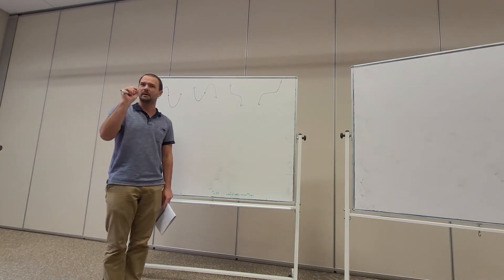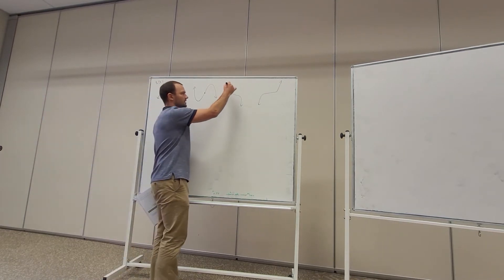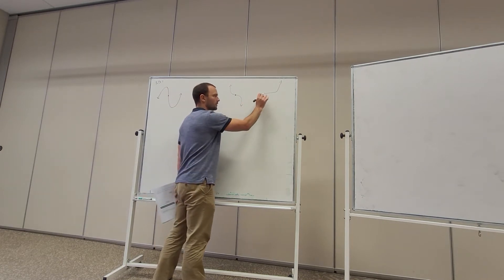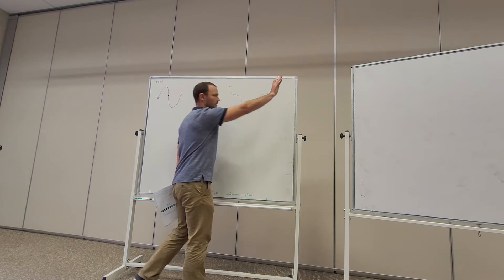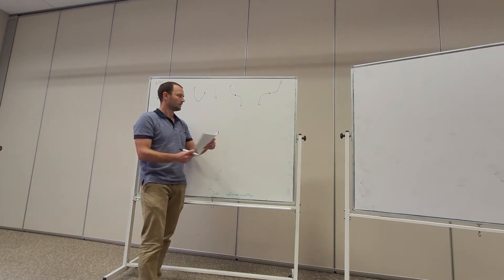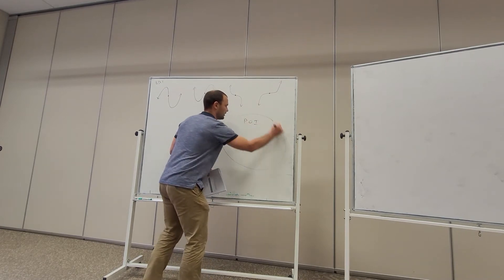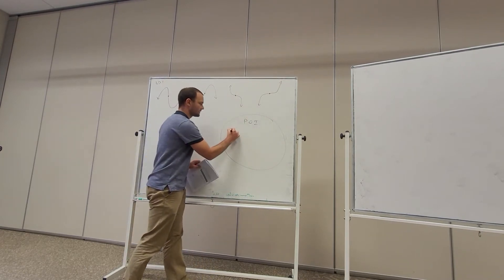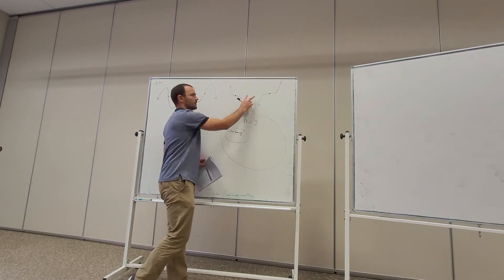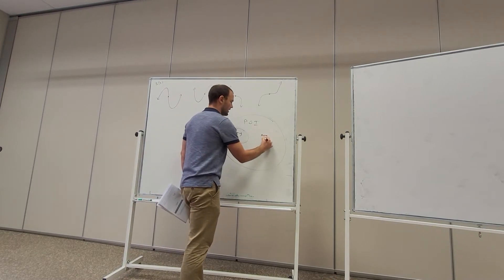In our last lesson we learnt about stationary point of inflection, which is where it's decreasing, goes horizontal, and then keeps decreasing again — or increasing, goes horizontal, and then keeps increasing. That's a special case of a point of inflection. So we've got a set of points of inflection, and within that we have stationary and we have non-stationary.